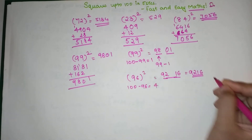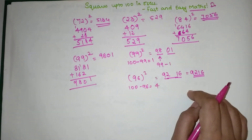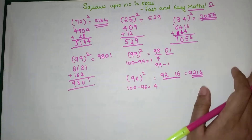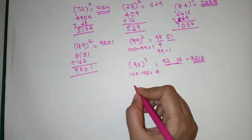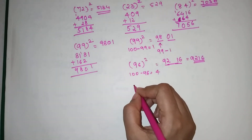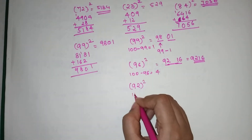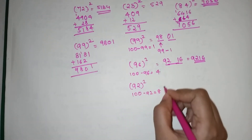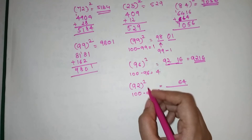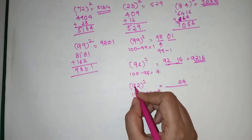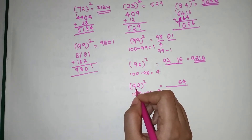So the answer for 96² is 9216. Now let's try 92²: 100 − 92 = 8. The last two digits are 8² = 64. Then subtract 8 from 92 to get 84. So the answer is 8464.